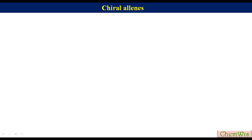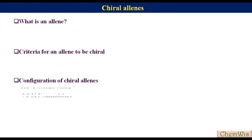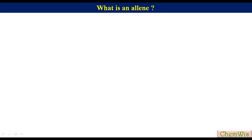Hello friends. The topic of today's discussion is chiral allenes. In this lecture we are going to discuss the following points: what is an allene, criteria for an allene to be chiral, configuration of chiral allenes — under which we will discuss two types of nomenclatures: RS nomenclature and PM nomenclature — and finally we will discuss cumulenes.